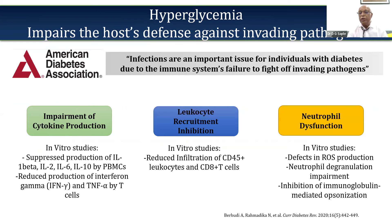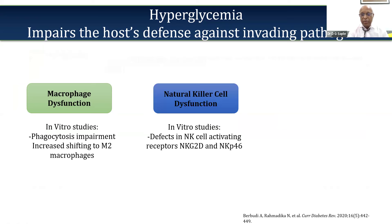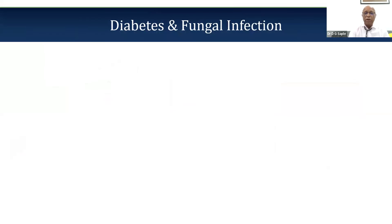Additional reasons include impairment of cytokine production responsible for inflammation, leukocyte recruitment, and neutrophil dysfunction — the neutrophil degranulation impairment required to control any foreign organism. Dysfunction of macrophages, scavenger cells, natural killer cells, and inhibition of antibodies are various basic reasons why skin manifestations are very common in diabetics.